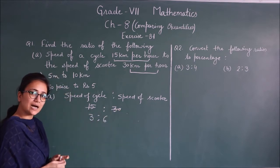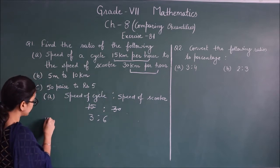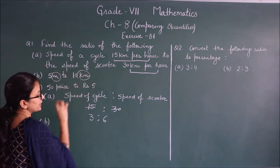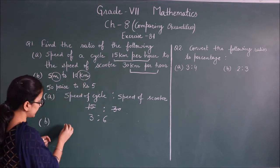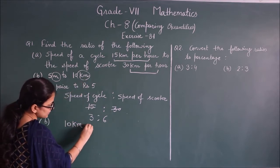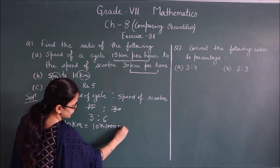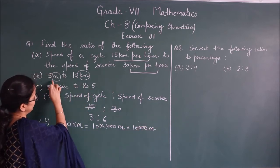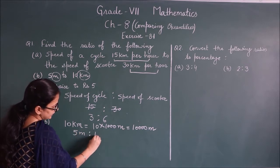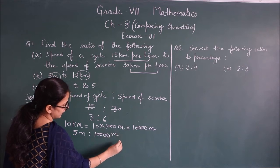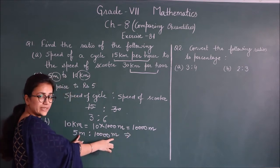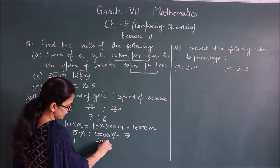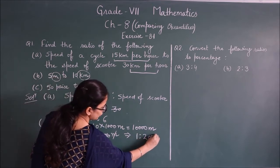Part B: 5 meters to 10 km. Here one is in meters and one is in kilometers, so we need to convert. 10 km = 10 × 1000 = 10,000 meters. Now ratio = 5 meters : 10,000 meters. Both in meters, so unit-less. Simplifying: 5/10000 = 1/2000. Answer: 1:2000.